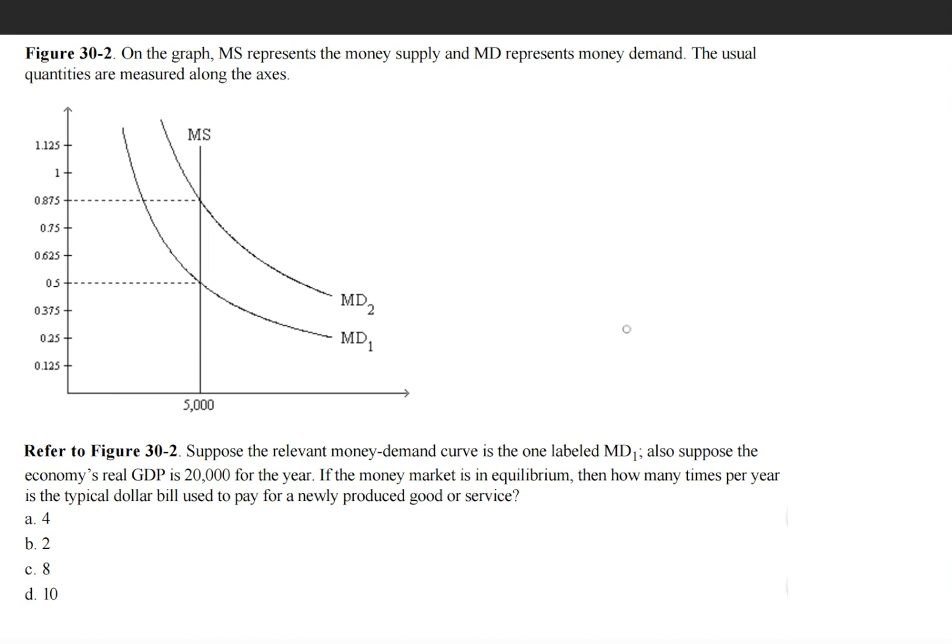So let's start off by defining that last statement. How many times per year is the typical dollar bill used to pay for a newly produced good or service? That is talking about velocity.